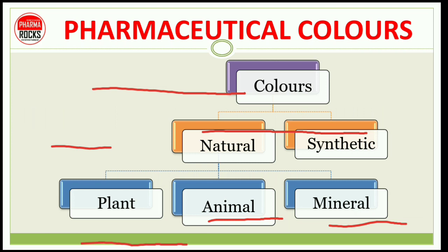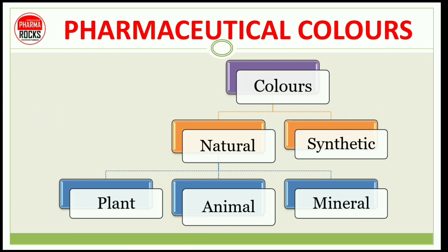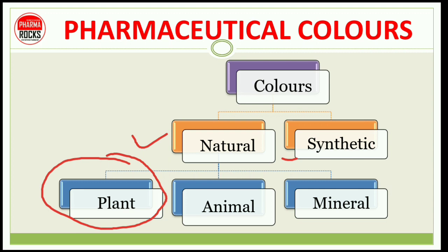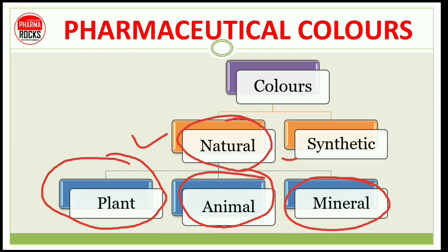Pharmaceutical colors classification: color का classification दो types से है — एक natural और दूसरा synthetic colors. Natural के तीन parts होते हैं: plant origin, animal origin, और mineral origin. Synthetic colors जो हैं वो various chemical reactions के through develop किए जाते हैं.